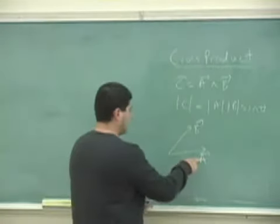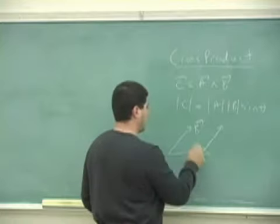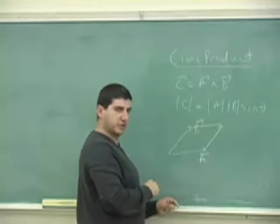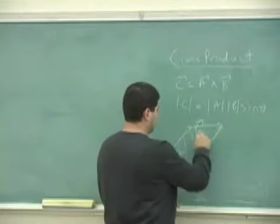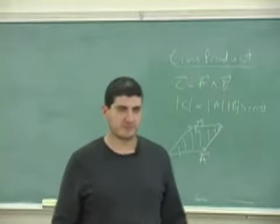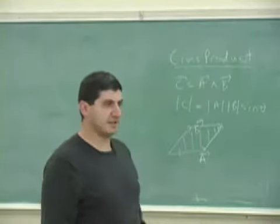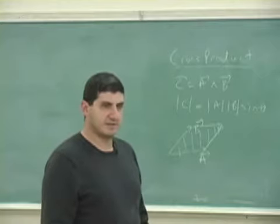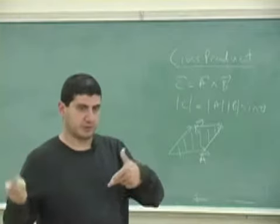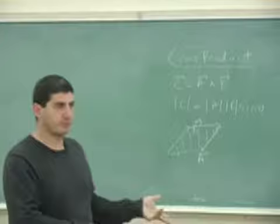If you put B to the tip of A, and put A to the tip of B, you form a certain parallelogram. What's the area of that parallelogram? It's A B sine theta. So the magnitude of the cross product gives you the area of the parallelogram formed by A and B.